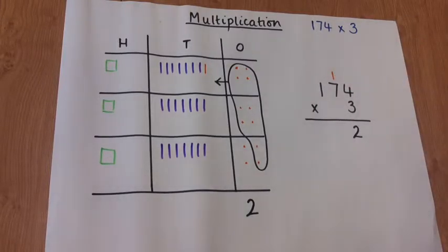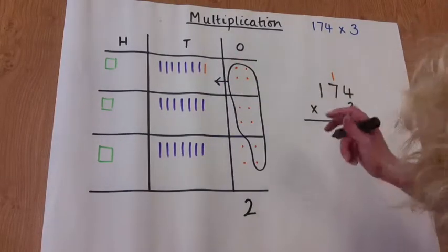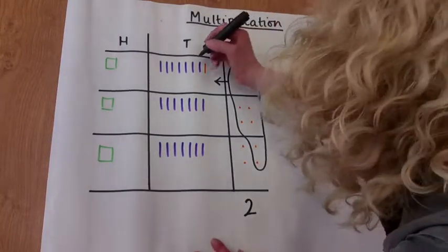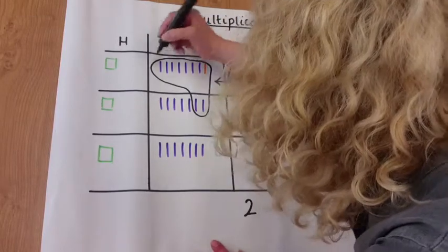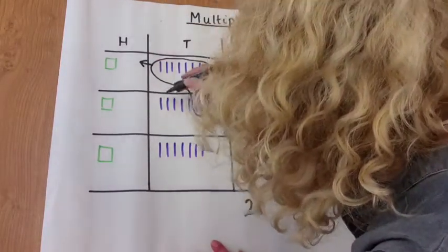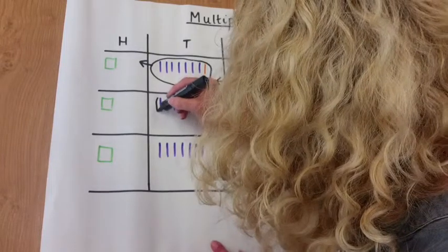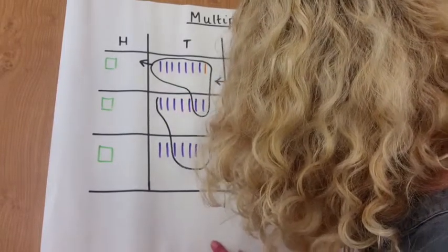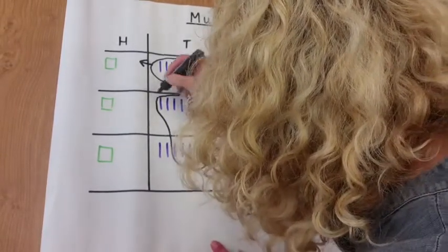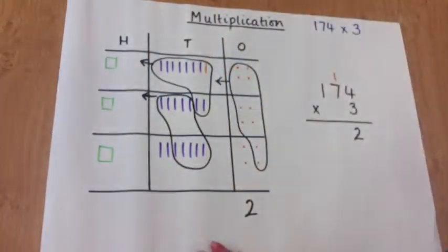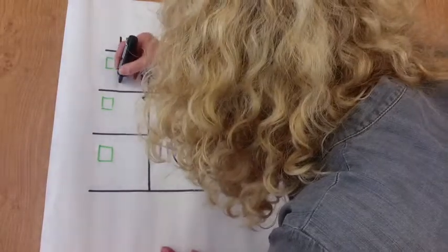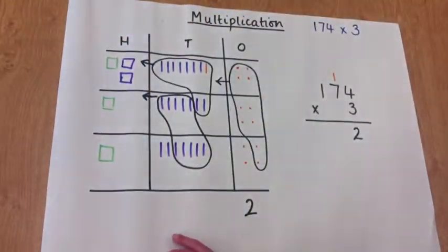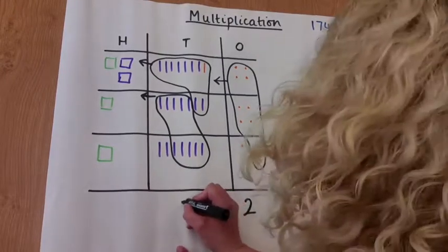Now looking at the tens column, we have three sets of 7 and one more, which makes 22. So again, we're regrouping one 10 to make 100, another 10 to make 100, and then there's two tens left over.